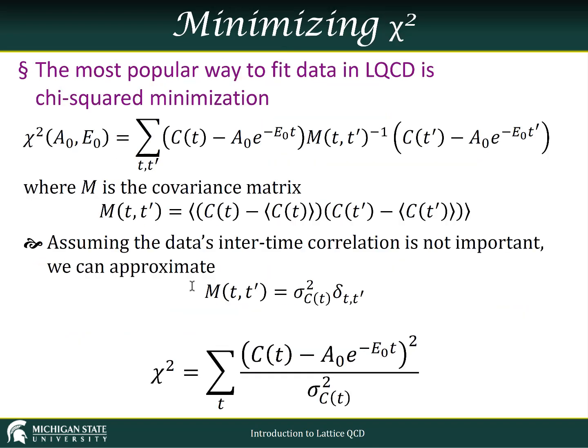The most popular way to fit data in lattice QCD is called chi-squared minimization. That's where we try to minimize this function, which we call chi-squared. It's the sum over all time, t and t prime, of the value of our correlator, that is our actual data, minus the predictions of this formula, a sub nought e to the minus e sub nought t. The same quantity over here, the correlator at some other time, t prime, and the prediction of our model for that time, and we connect these by some metric.